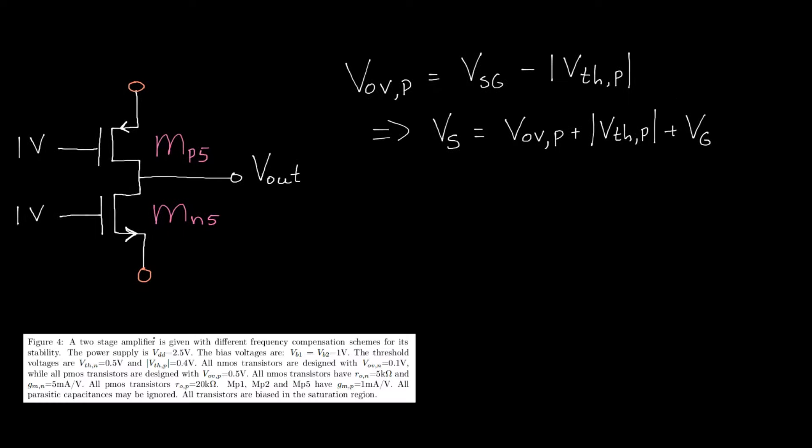In the caption of the figure, we can find the value for VOVP, that is 0.5 volts. So we can fill in that value, 0.5 volts. The absolute threshold voltage is also given, that's 0.4 volts. And the gate voltage is the bias voltage, bias 2, so that is 1 volt. And together, that makes 1.9 volts. So we can now fill in, in this figure, that this source has a voltage of 1.9 volts.